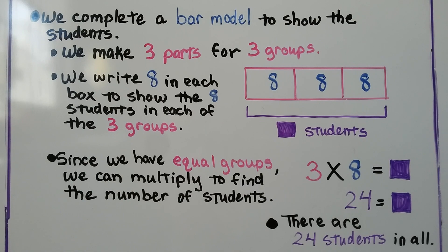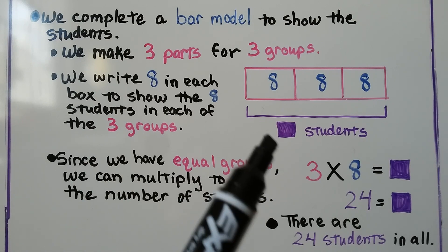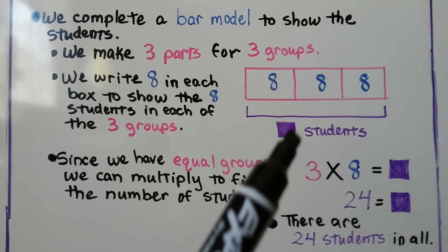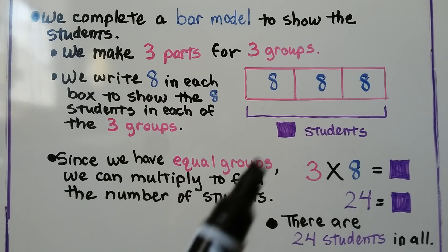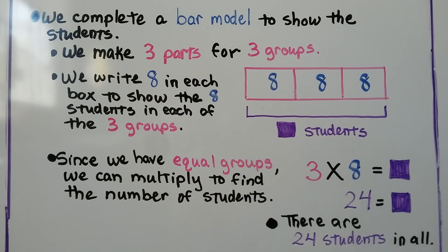A little side note for the parents: the reason they're using this purple square is because within the next couple of years they're going to be using variables as an unknown amount, and this prepares them for starting to use variables.